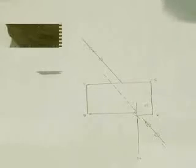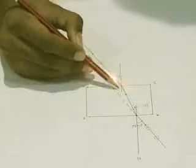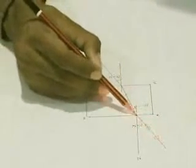Then at this side we have drawn a normal and we have joined this point and this point. This is the refracted ray through the glass slab.